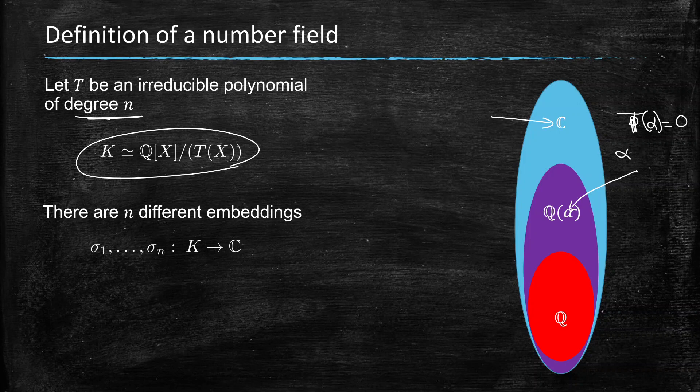How this is made possible is by writing down T of X as its factors over C as a product from i equals 1 to n of X minus alpha i, and we can map our value alpha to one of the complex roots alpha i.